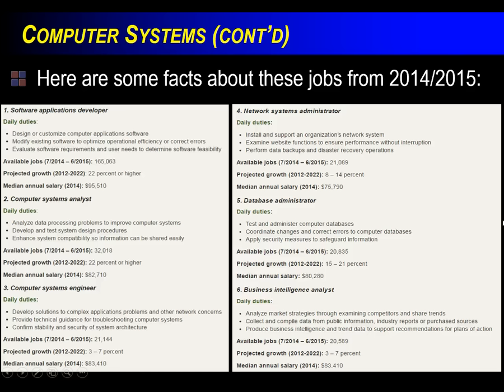For a software applications developer, their daily duties include: design or customize computer application software, modify existing software to optimize operational efficiency or correct errors, and evaluate software requirements and user needs to determine software feasibility. There's a lot of overlap. The minimum requirement listed was a computer science degree or related degree. A business intelligence analyst would benefit from both a CS degree and a business degree, while a software app developer may need CS experience more heavily.